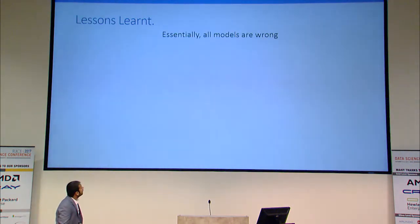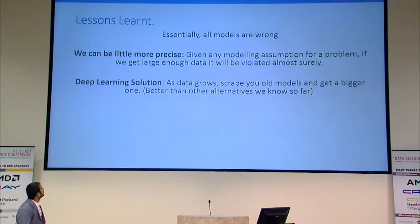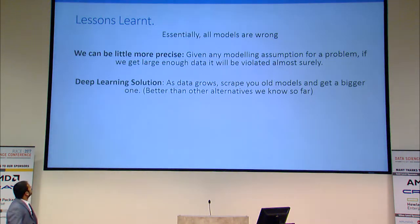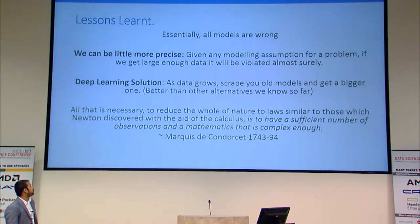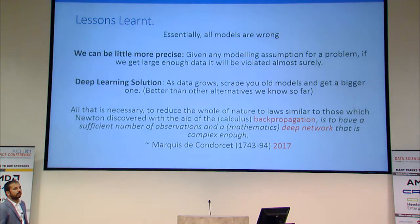There are a couple of lessons learned. In statistics, people know that essentially all models are wrong. But after what we are seeing recently, we can be more precise: given any modeling assumption for a problem, if we get large enough data, it will be violated almost surely. What deep learning has shown us is that as data grows — in 2012 I probably need 17 layers, but with more data maybe 152 layers. So as your data grows, scrap your old models and get a bigger one. Condorcet said around 1700: all that is necessary to reduce the whole of nature to laws similar to those Newton discovered, with the aid of the calculus, is to have a sufficient number of observations and a mathematics that is complex enough. This is almost true today if you replace calculus with backpropagation and mathematics with deep learning.